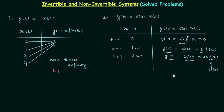So whenever the problem is a little bit complicated, don't select numerical values as your input. You can select standard signals like the impulse or step to solve the question. For example, let x(t) = δ(t), the unit impulse signal. For this input, y(t) = sin(t)·δ(t) = 0. Now how is it equal to 0? I have used the property of the impulse signal.